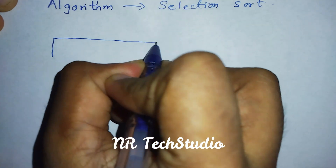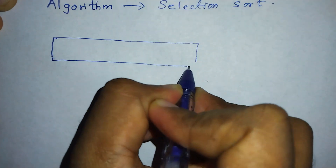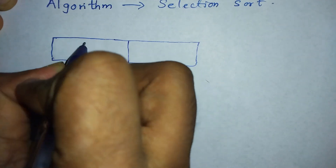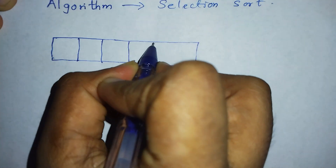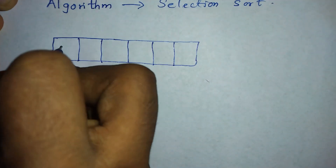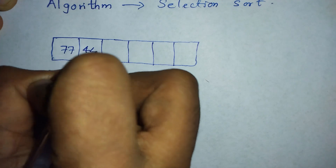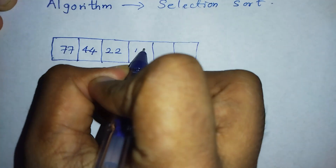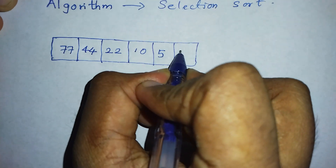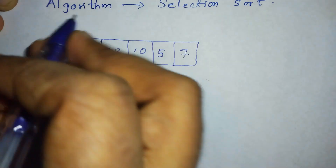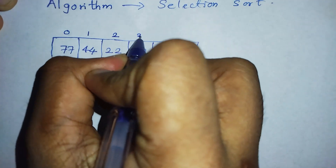Let's say we have an array of six elements. Let me draw the array for you: 77, 44, 22, 10, 5, and 7. Then number the elements of the array from zero to five.